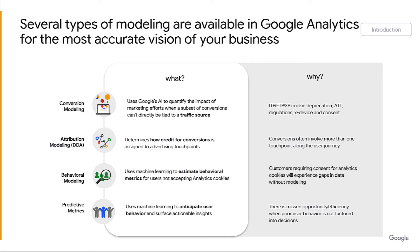There are several types of modeling available in Google Analytics to help give you the most accurate vision of your business. First, conversion modeling uses Google's AI to help you measure the impact of your marketing efforts when you can't directly attribute conversions to a traffic source — this fills in gaps due to changes in privacy regulation and deprecation of cookies. Next, attribution modeling, specifically data-driven attribution, determines how credit for conversions is assigned to advertising touch points. Third, behavioral modeling uses machine learning to estimate behavioral metrics for users who do not consent to analytics cookies. And lastly, predictive metrics help you anticipate user behavior such as purchase or churn, and surface actionable insights in GA4. Later in this presentation, we will explore conversion modeling and behavioral modeling in more detail.